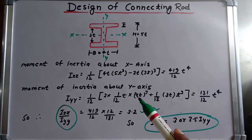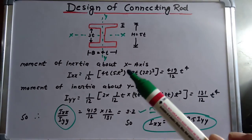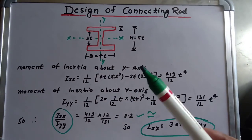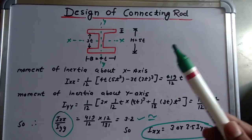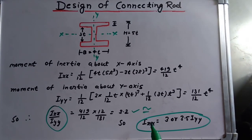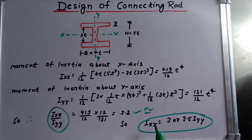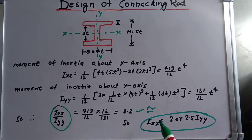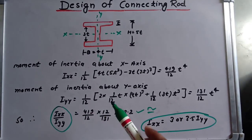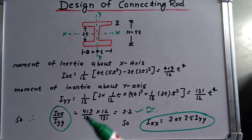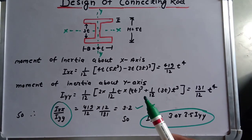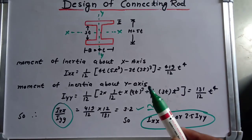So we get that Ixx ≈ 3 to 3.5 times Iyy. This relation is very important for the dimensions of the cross section of the connecting rod and will be used in the Rankine formula to get the buckling load.